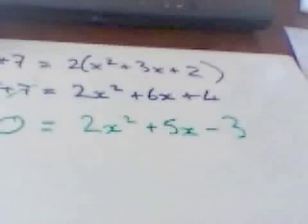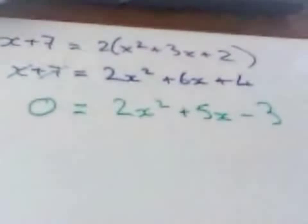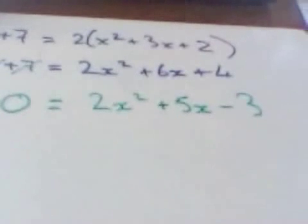This leaves me with 2x²+5x-3. At this point we're going back to our much earlier work on factorizing quadratics.